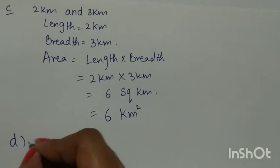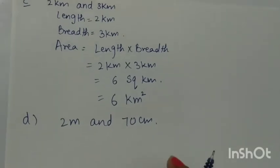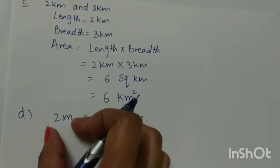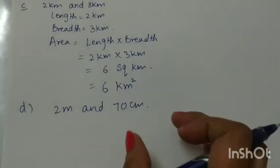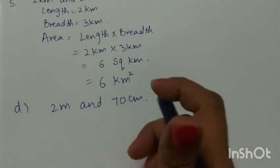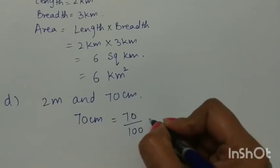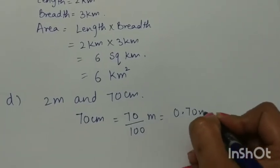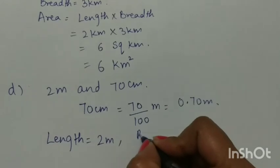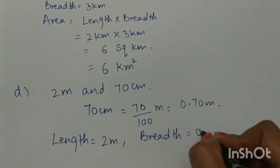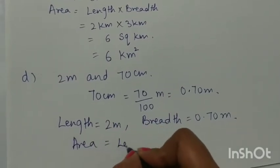Part D: the sides are 2 meters and 70 centimeters. First we will convert the units. Here I am converting 70 centimeters into meters. 70 centimeters will be 70 divided by 100 meters, so this will be 0.70 meters.